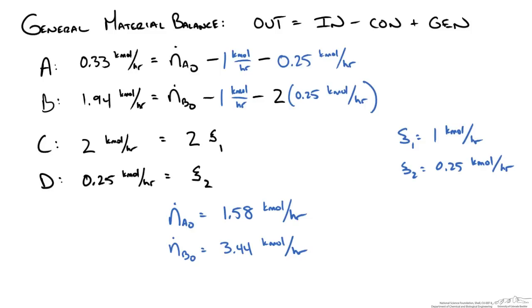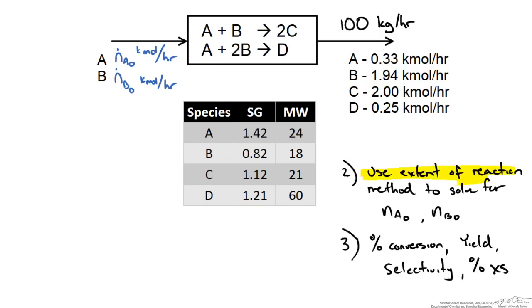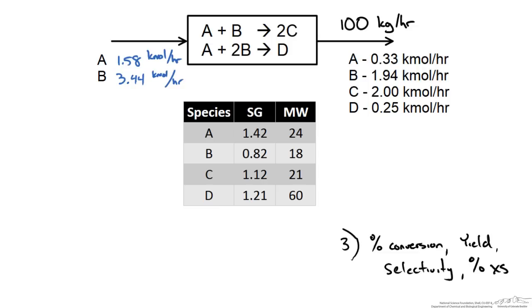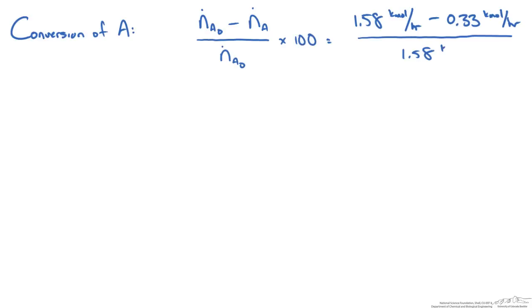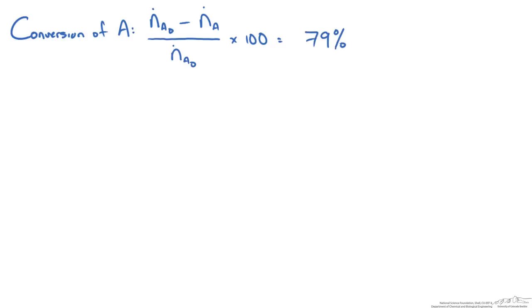We have now solved for the inlet flow rates and can proceed to calculate the four requested quantities. To calculate the percent conversion of A, we look at the amount of A that entered the reactor compared to the amount that left, all over the original amount that entered. When we take this ratio and multiply by 100, we get 79% conversion of A.